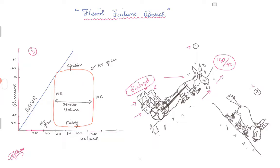Now let's add another thing: if the donkey is still going uphill and you start hitting it with a stick, I'll label that as inotropes. Yes, this will make the donkey work a little more, but if it's still carrying the same preload, the afterload is the same, and you're still pushing it uphill — you're just going to tire it out and it might faint or die.